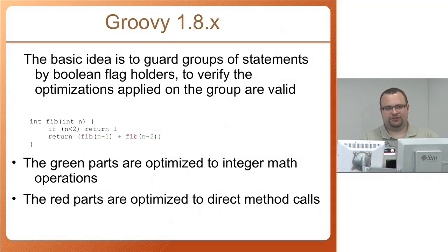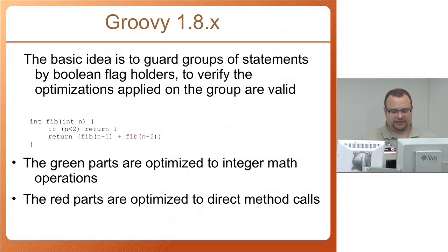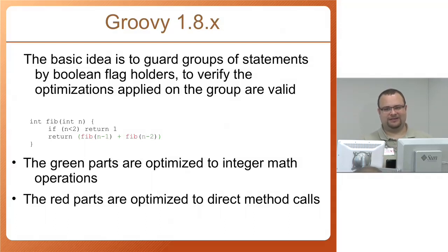The booleans are there to ensure the call is valid. If it's valid, you dive into your optimized block and do, for example, integer minus calls, integer add calls — just what javac would produce. In this case, the N-minus-one, N-minus-two, and the plus are all done in javac-style integer math. The calls to fib, in red, are direct method calls. So if you compare the code written in this fast path, it's really the same that javac would produce. Anyone who has worked with Hotspot knows that you can produce code that is not initially optimized — it doesn't matter as long as it looks like what javac produces, because those are the patterns Hotspot will recognize and optimize.